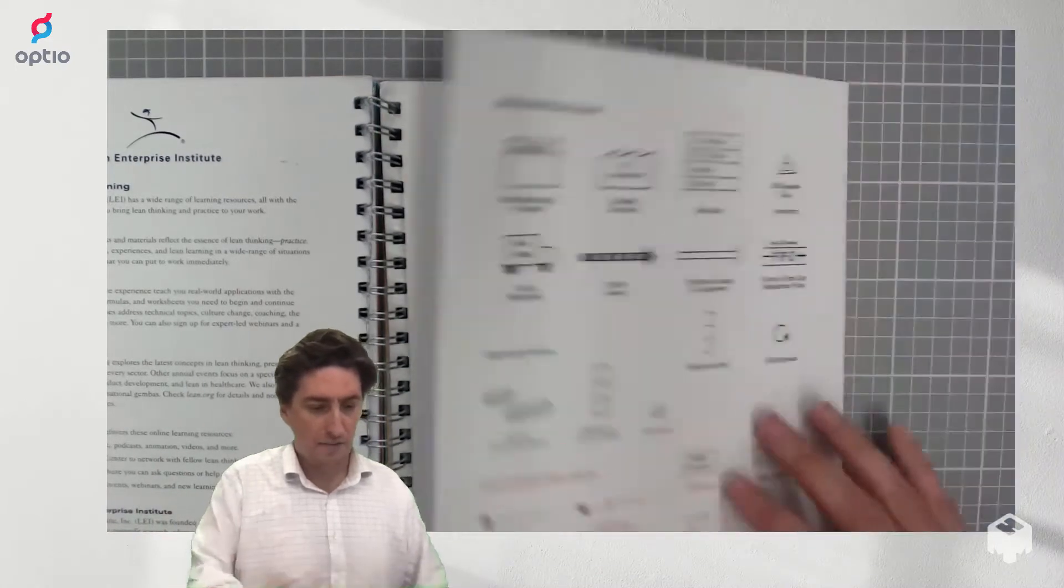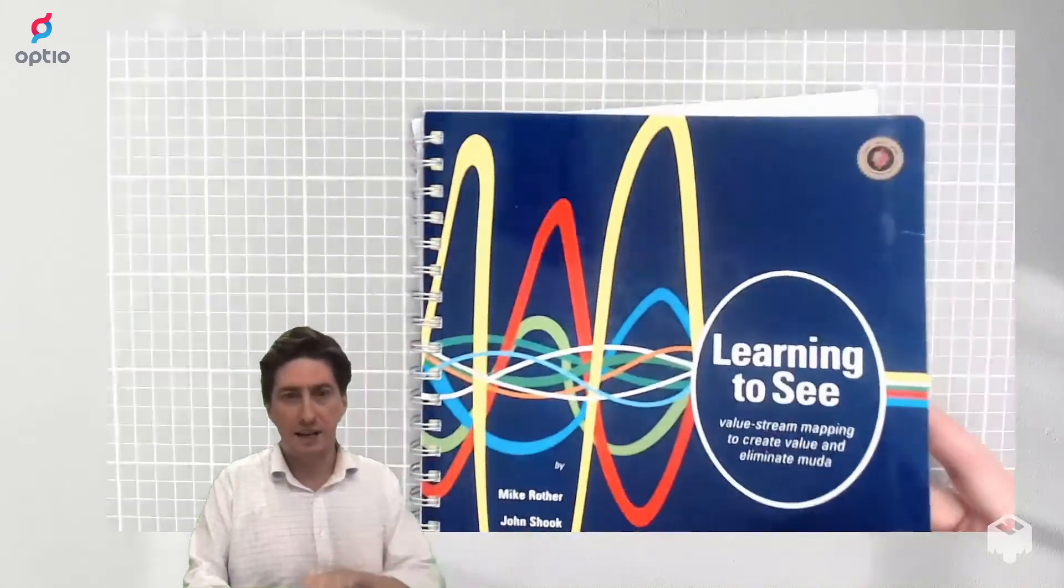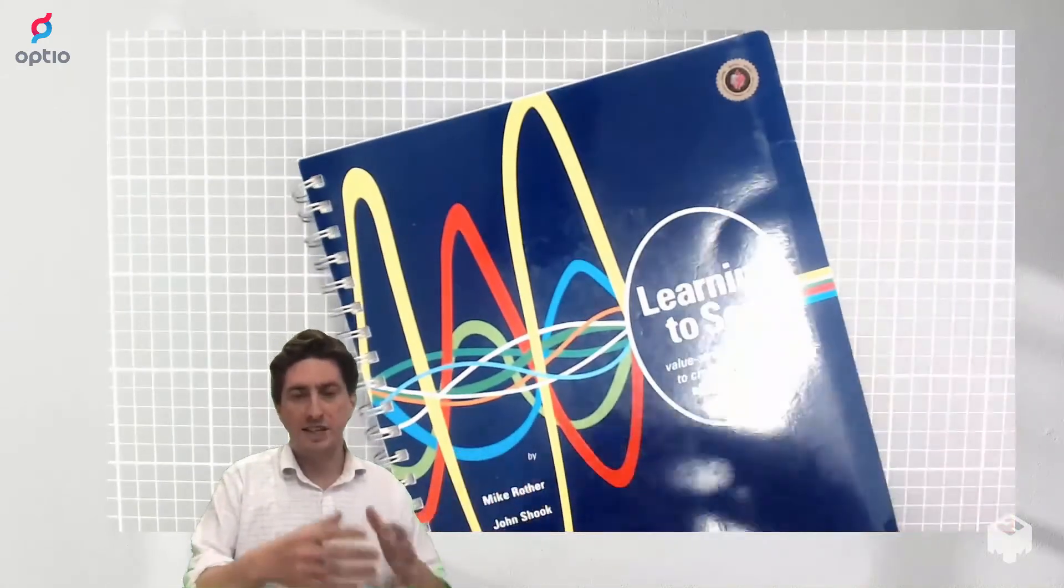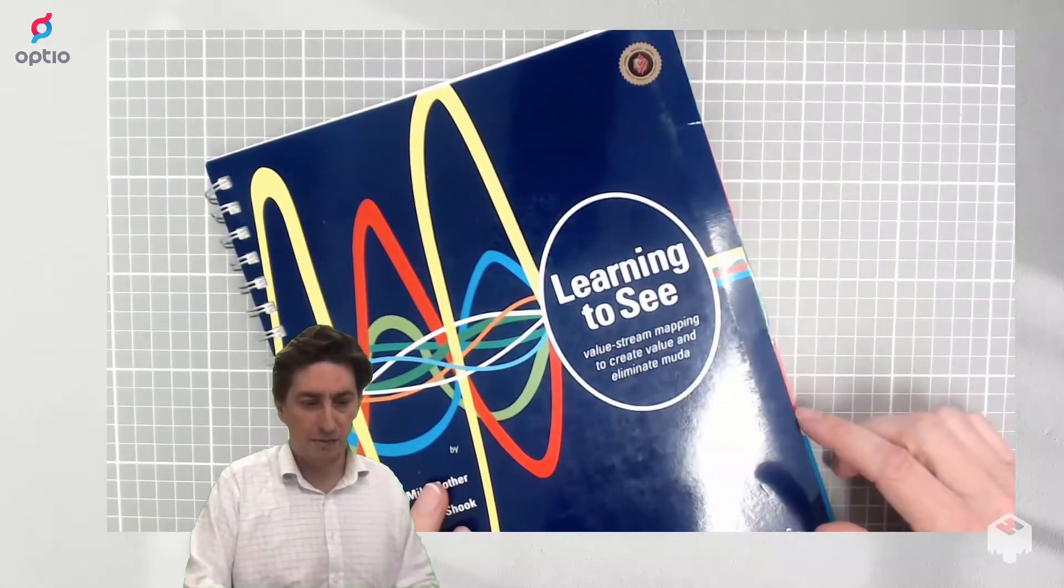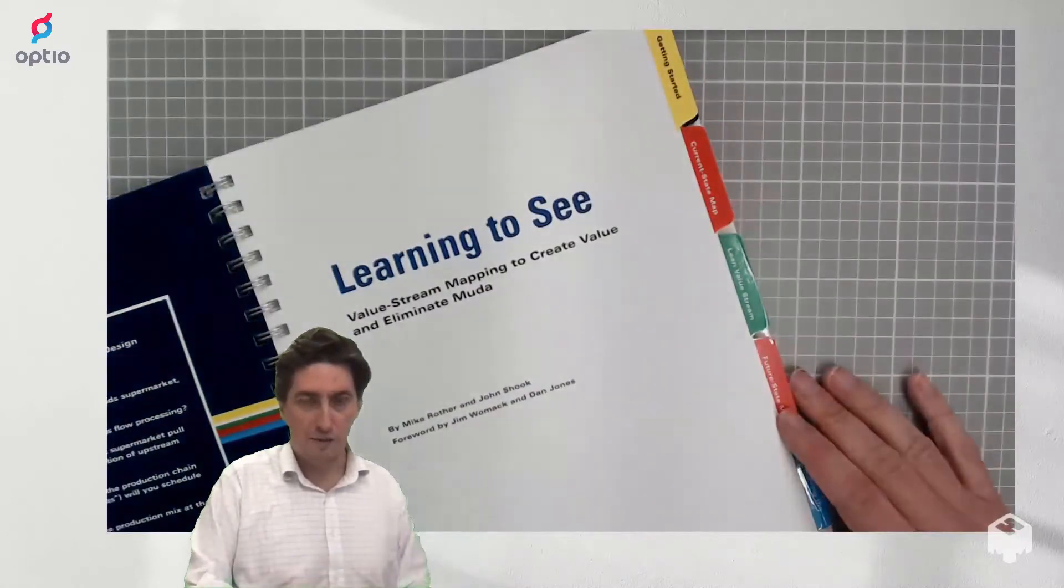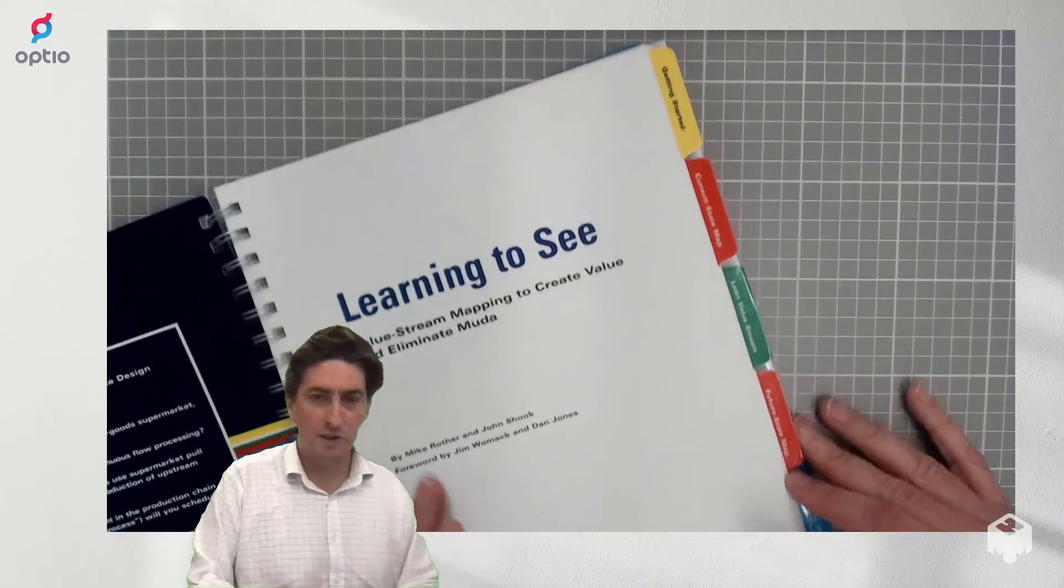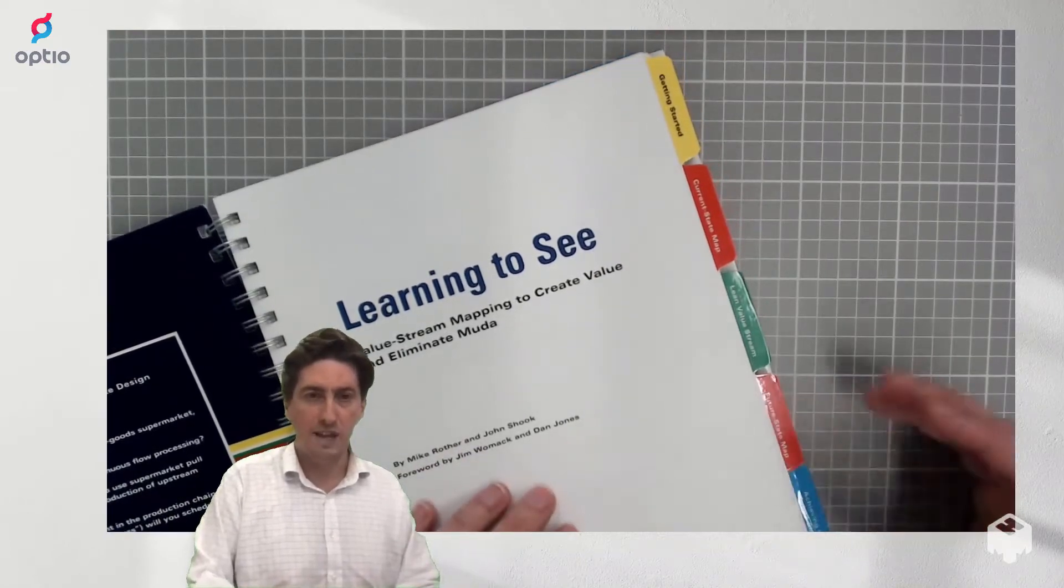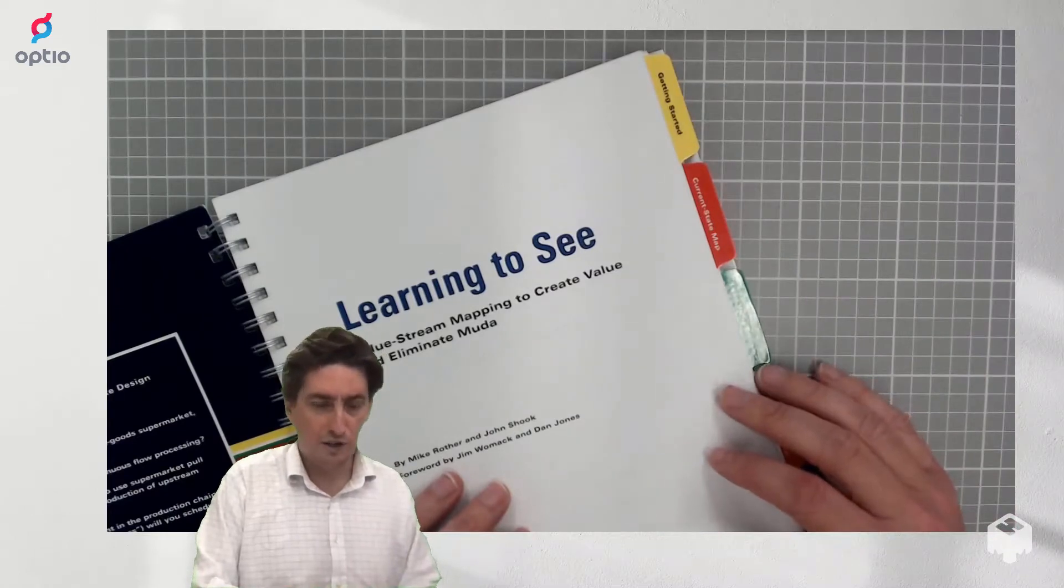So what the book does is it uses value stream mapping to analyze the before, then suggests an after based on lean practices and then explains how this can be implemented. So you have a spiral binding format here which allows you to really take the book with you onto the factory floor, take pen and paper with you and actually do your value stream map.